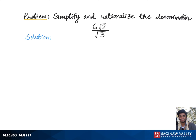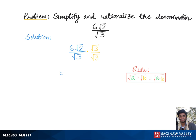To rationalize the denominator of 6√2 over √3, we need to multiply both the top and bottom of the fraction by √3, which, according to this rule, gives us 6√2 times √3 over √3 times √3.